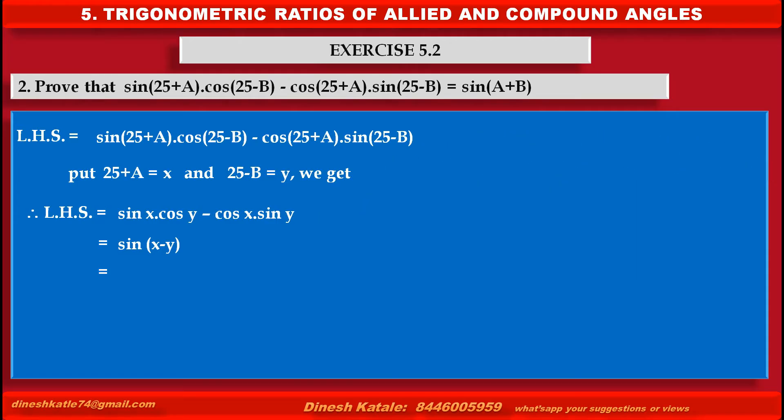Substituting the values of x and y, we get sin(25+A - (25-B)). Canceling +25 and -25, we get sin(A - (-B)) which is equal to sin(A+B), which is equal to the required right hand side.